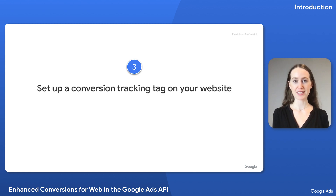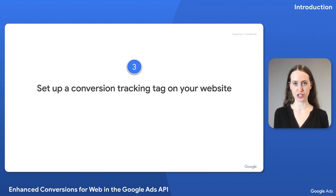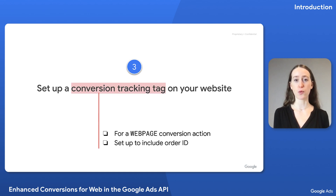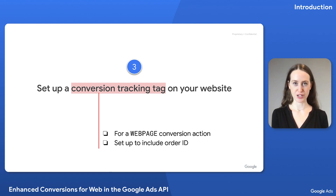Lastly, you must set up a conversion tracking tag on your website. The tag you configure on your website sends information about the conversion to Google Ads. The tag must be for the web page conversion action you created previously, and must be set up to include the order ID, also known as the transaction ID. You can find instructions for this linked in the video description.